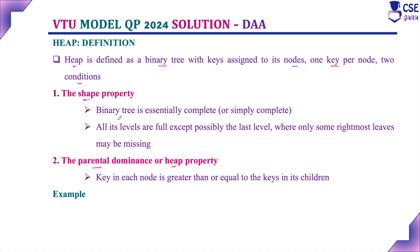The shape property means the binary tree should be a complete binary tree. Starting from the root node, the elements or keys will be filled from left to right. All levels should be full except possibly the last level. The last level may be partially filled, but the leftmost node should not be empty while the rightmost one is filled. Starting from the 0th level: 0th level has 1 node, next level 2 nodes, next level 4 nodes. You should fill leftmost nodes first, then go for the rightmost node. That is nothing but a complete binary tree.